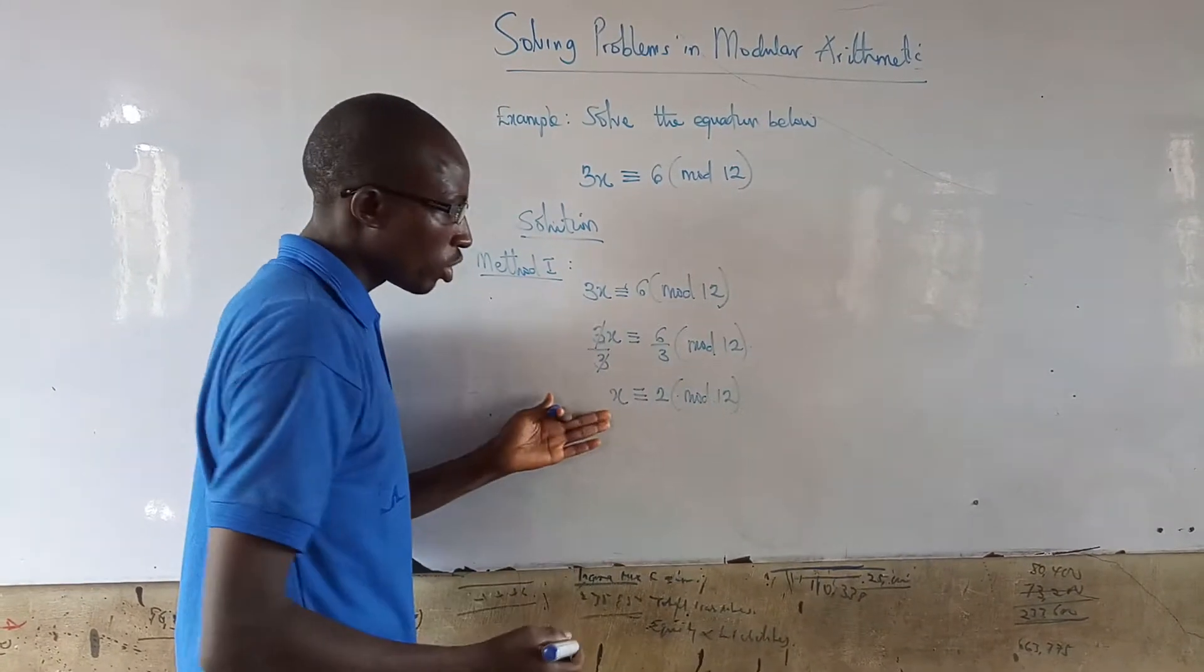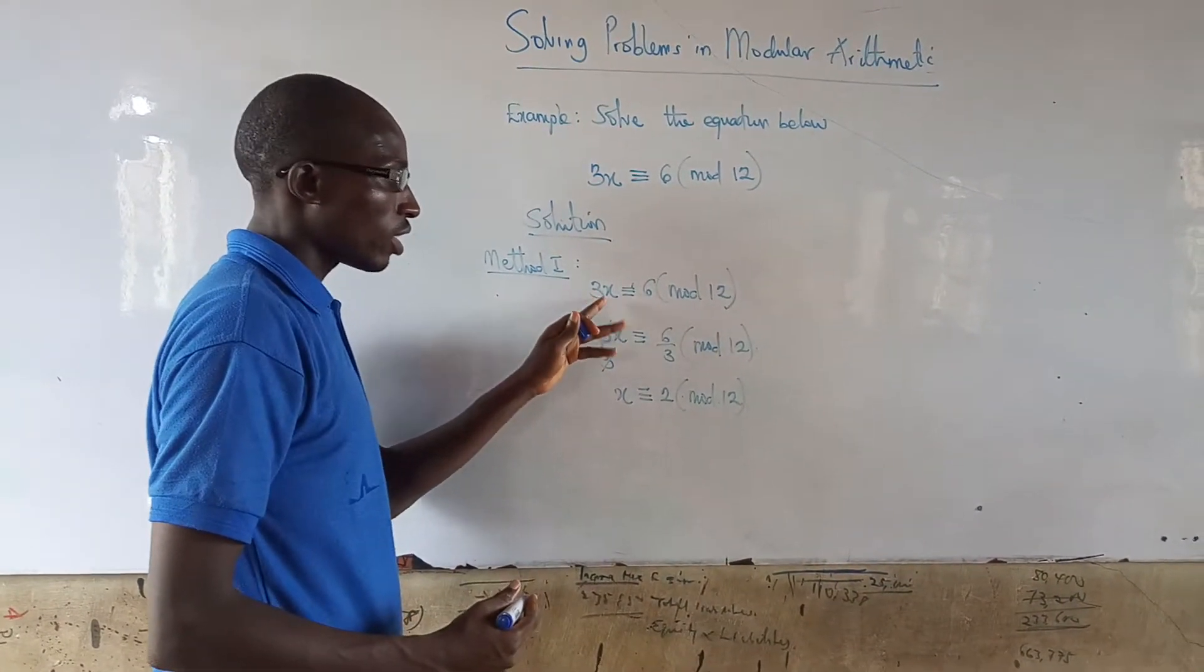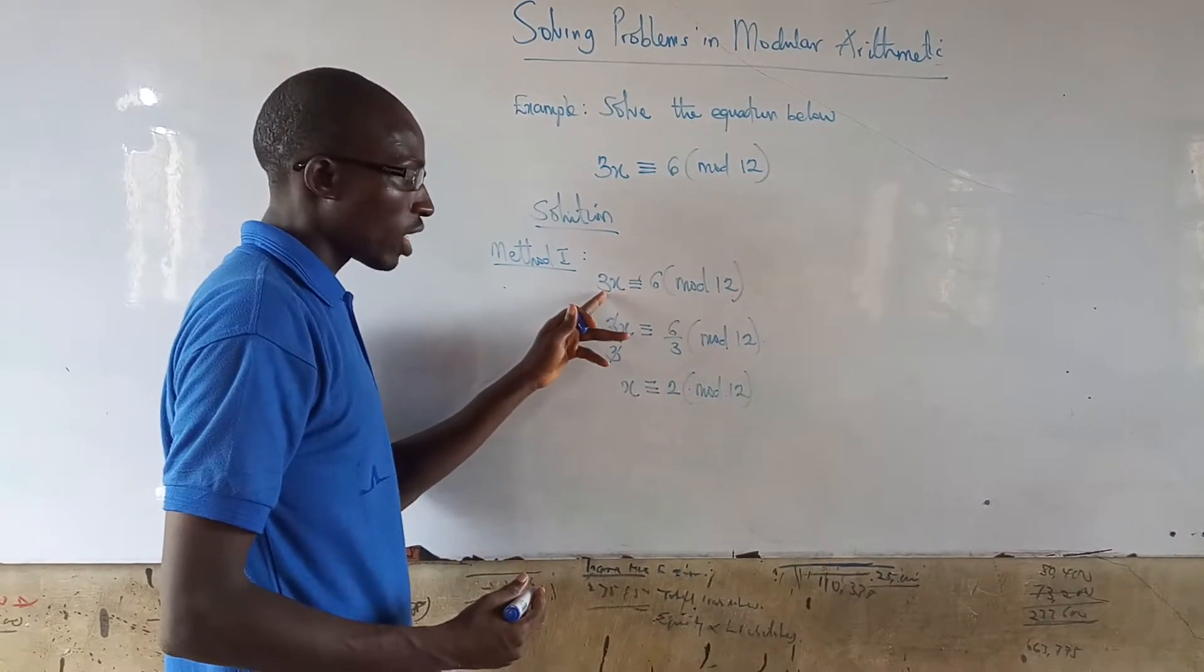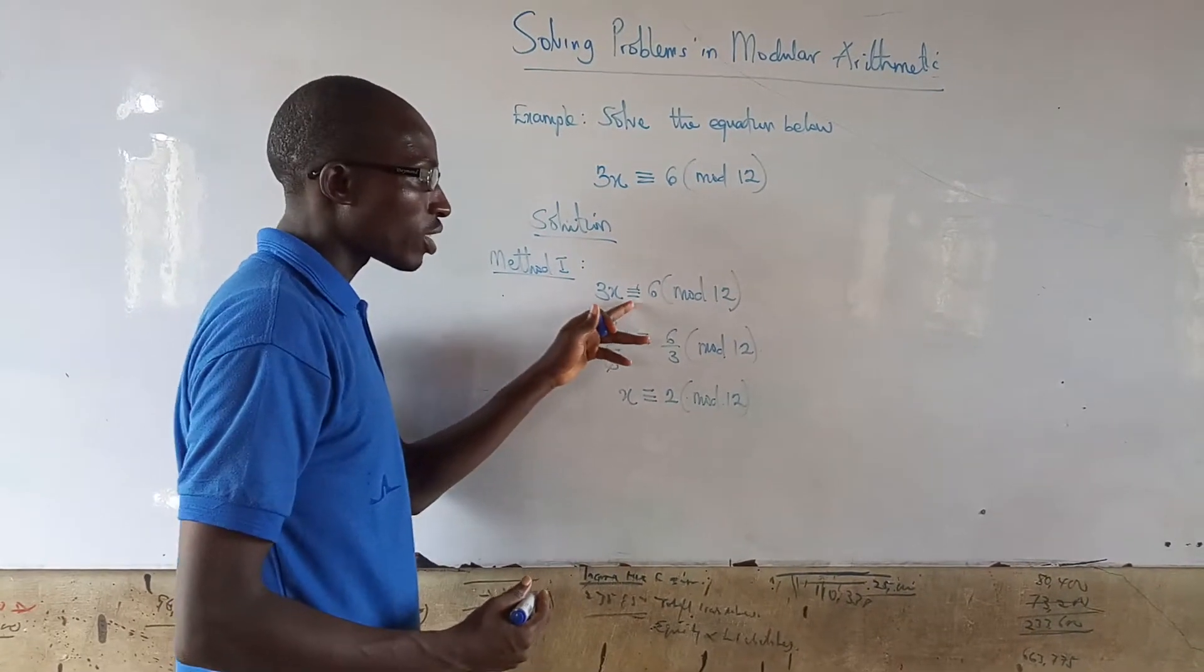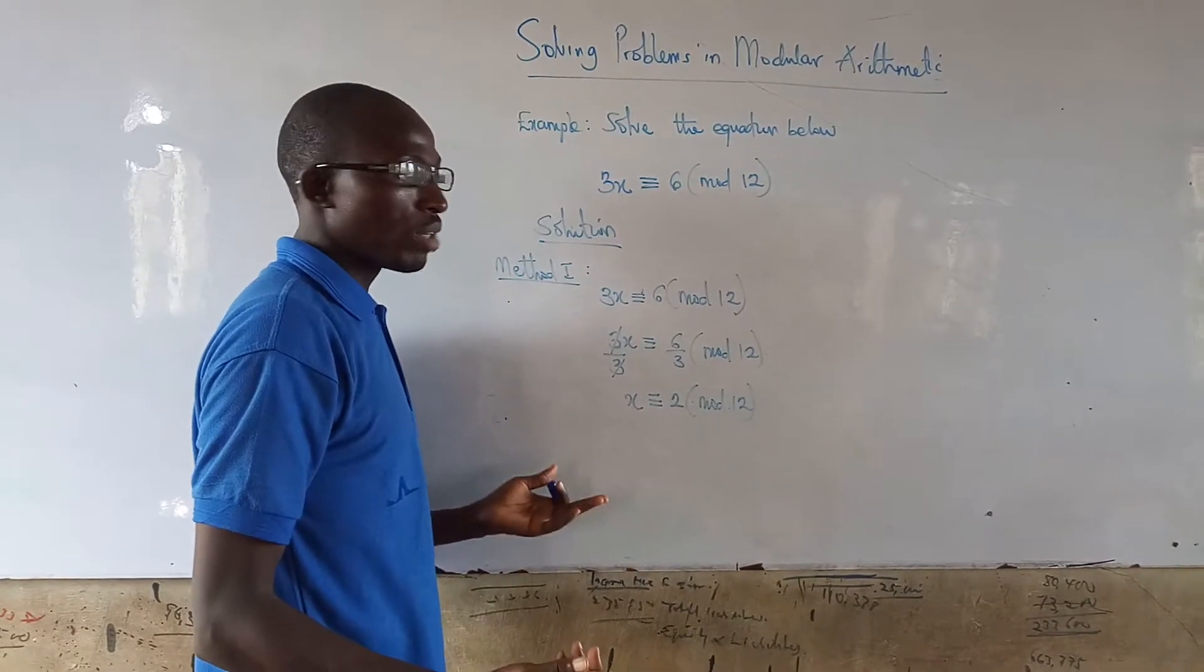So the interpretation of this result is that x is equal to 2. That is, if I have 2 here now, 3 times 2 is 6, so 6 is congruent to 6 mod 12, which really makes sense.